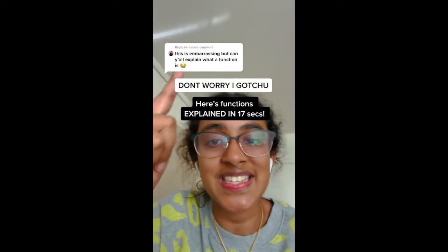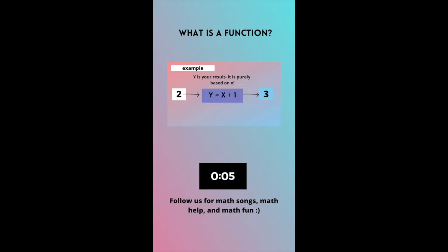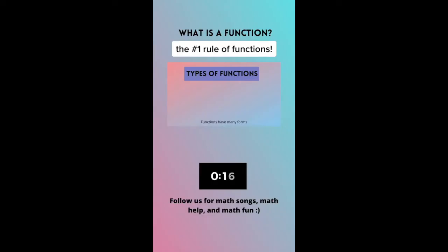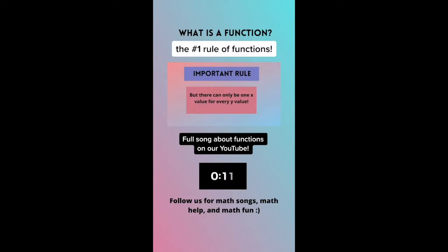Here's functions explained in just 17 seconds. A function is the relationship between y and x. X is independent — you can make it what you want. Y is your result; it is purely based on x. Each pair of values can be written as (x, y). Functions have many forms — they can be curves or lines. But there can only be one x for one y. If the y's for an x is more than one, you do not have a function.